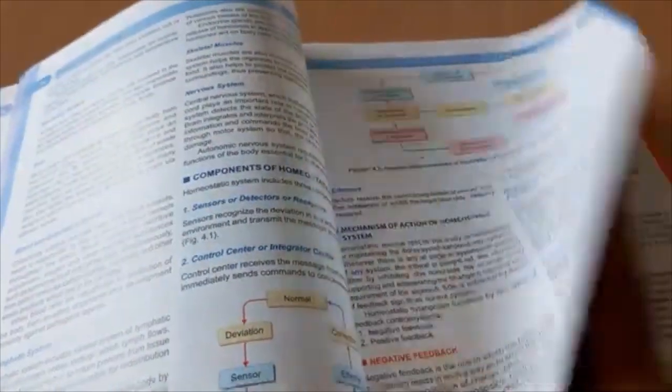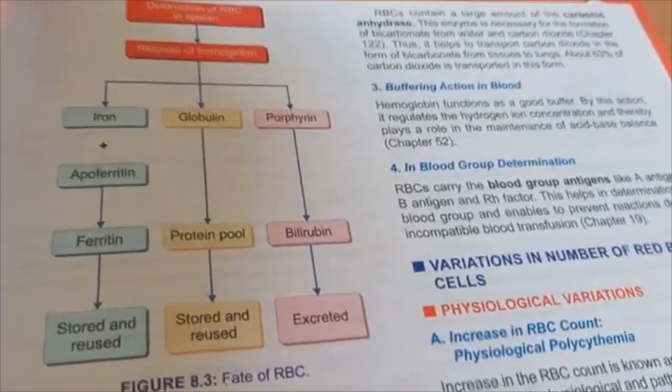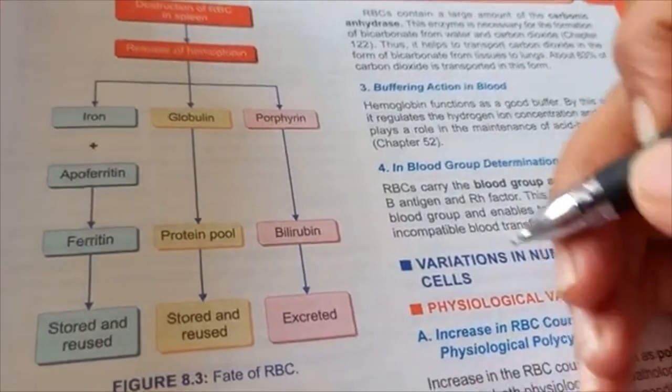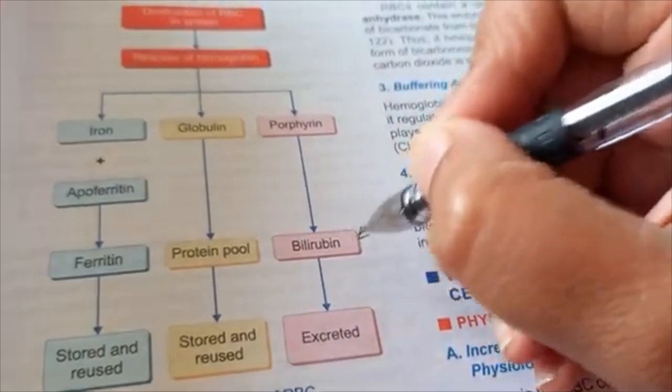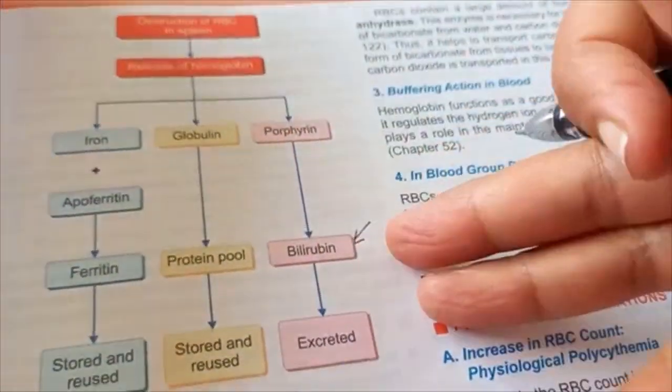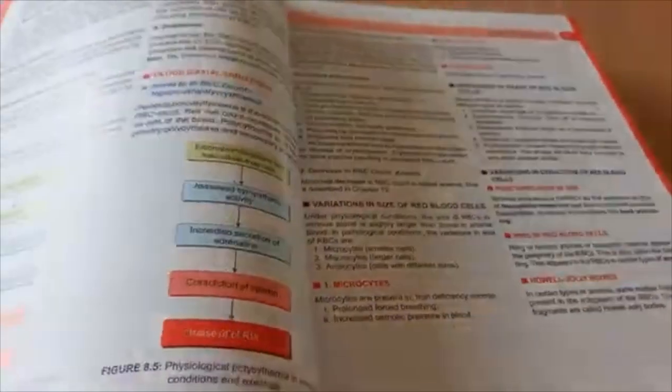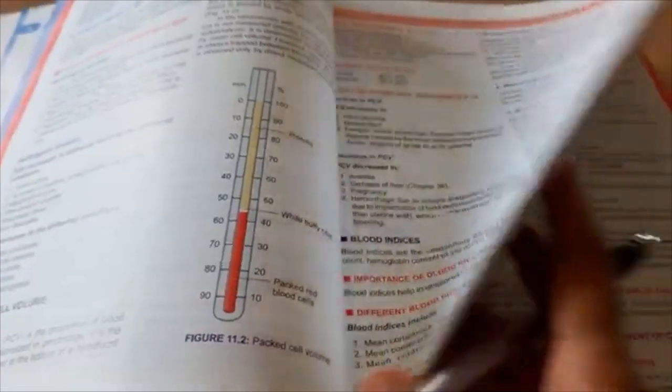Another important and high-yield topic where possible exam questions can come from is hematopoiesis — that is, the process of blood formation. It is important to note that hematopoiesis is the formation of all blood cells, including red blood cells, white blood cells, and platelets. You can have questions from any of these different lineages of blood cells, but the red blood cell lineage is the most commonly asked. Other examples of blood-related questions that are frequently asked in physiology exams include anemia, hemolytic disease of the newborn, ABO blood group and rhesus incompatibility, and hematopoiesis.